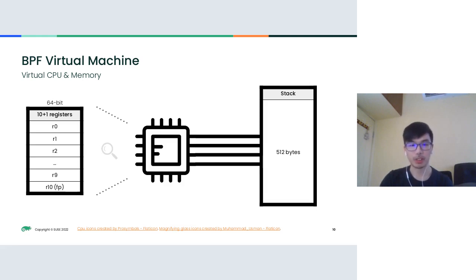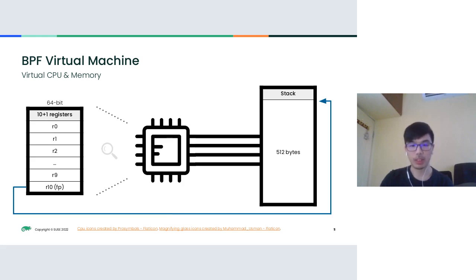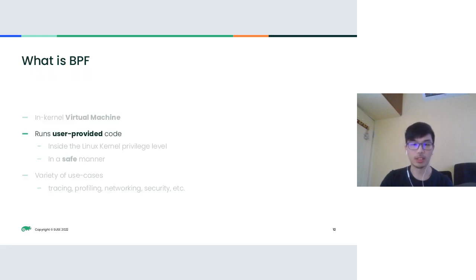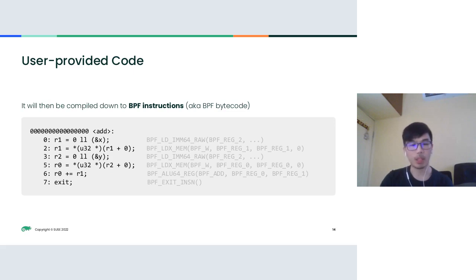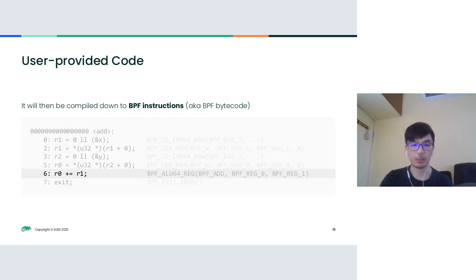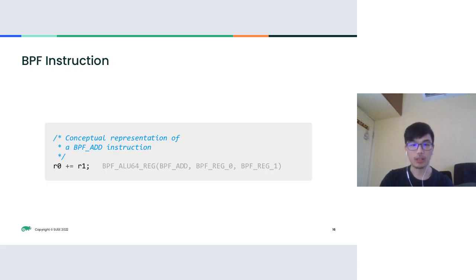There are 10 plus 1 registers in the virtual CPU. R0 through R9 are both readable and writable. The 11th register, R10, is a frame pointer — it points to the top of the stack, allowing the BPF program to utilize it. Users usually write BPF programs in C, though other languages are possible. The C code is passed to a compiler which produces BPF instructions in user space — also known as BPF bytecode. For example, a plus or addition operation is translated into a BPF add instruction.